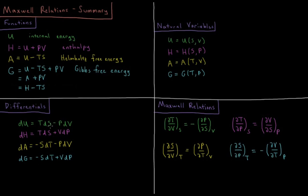From these differentials, we see that each of these energy functions has their own natural variables: U being a function of S and V, H being a function of S and P, A being a function of T and V, and G being a function of T and P.